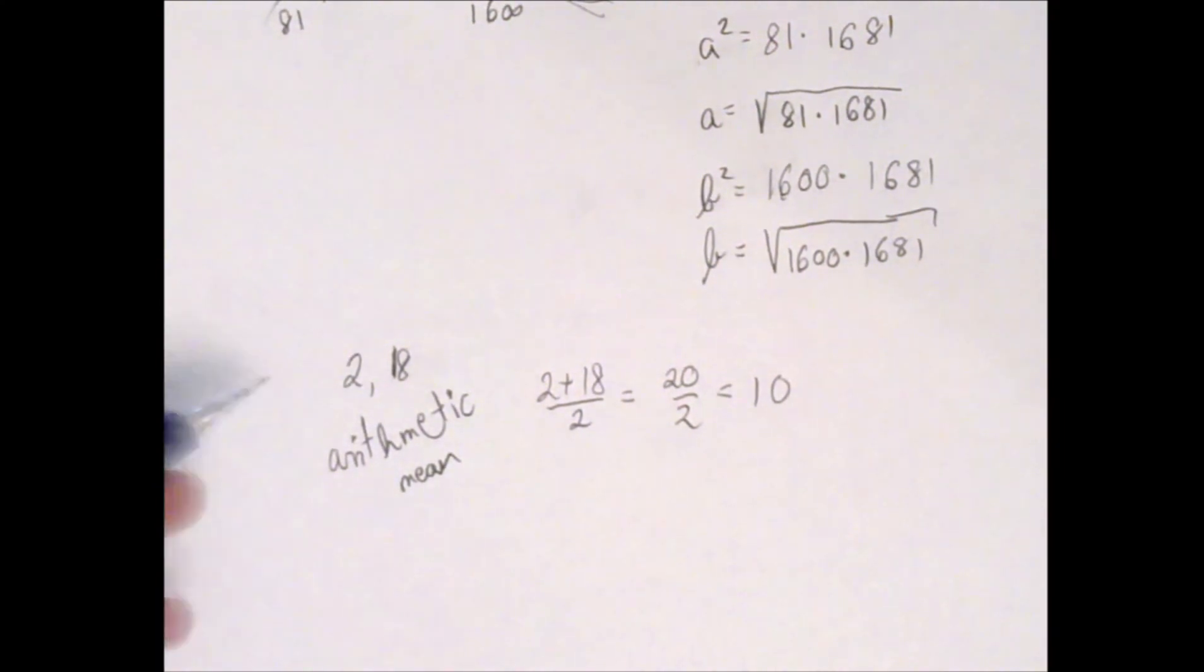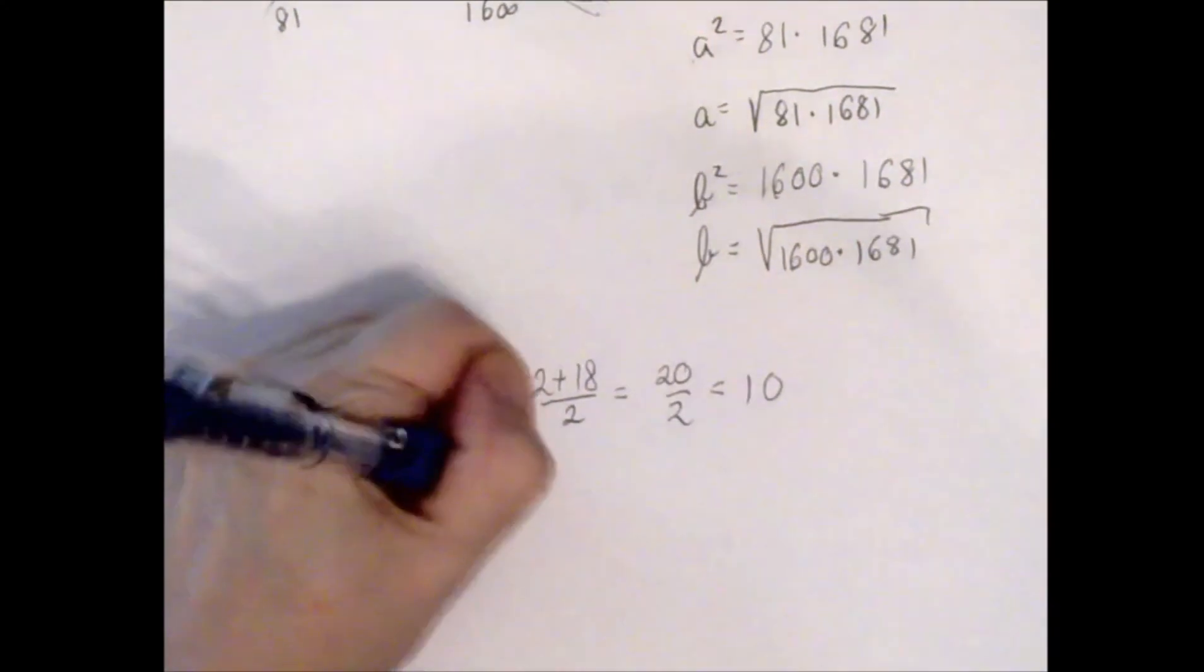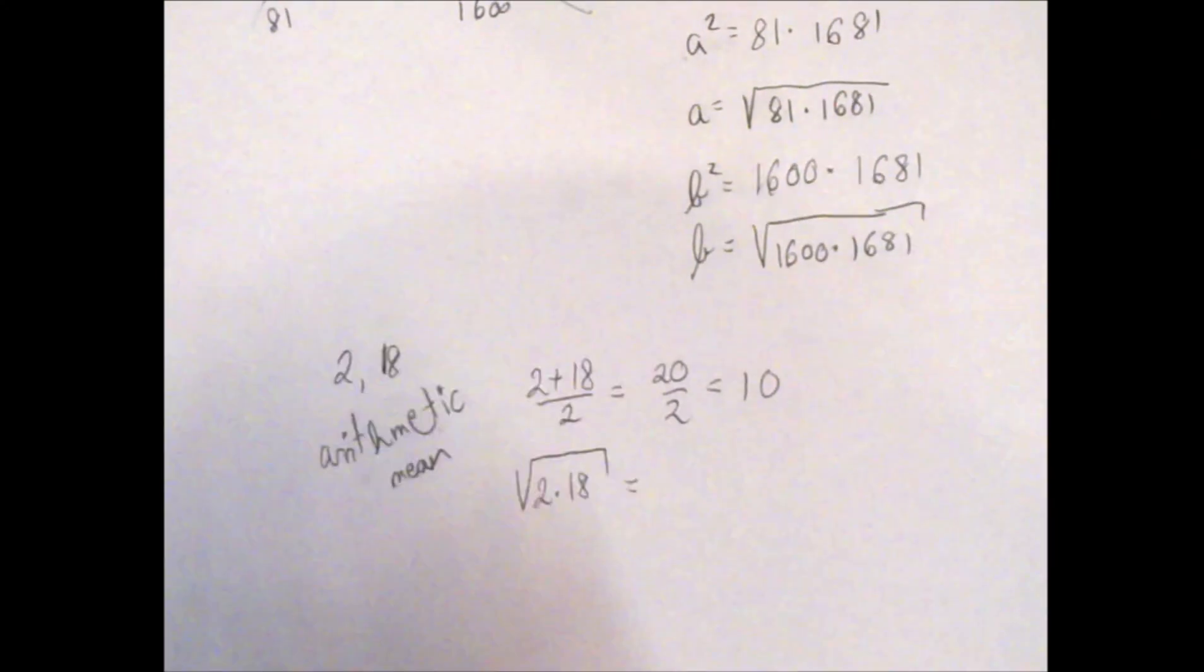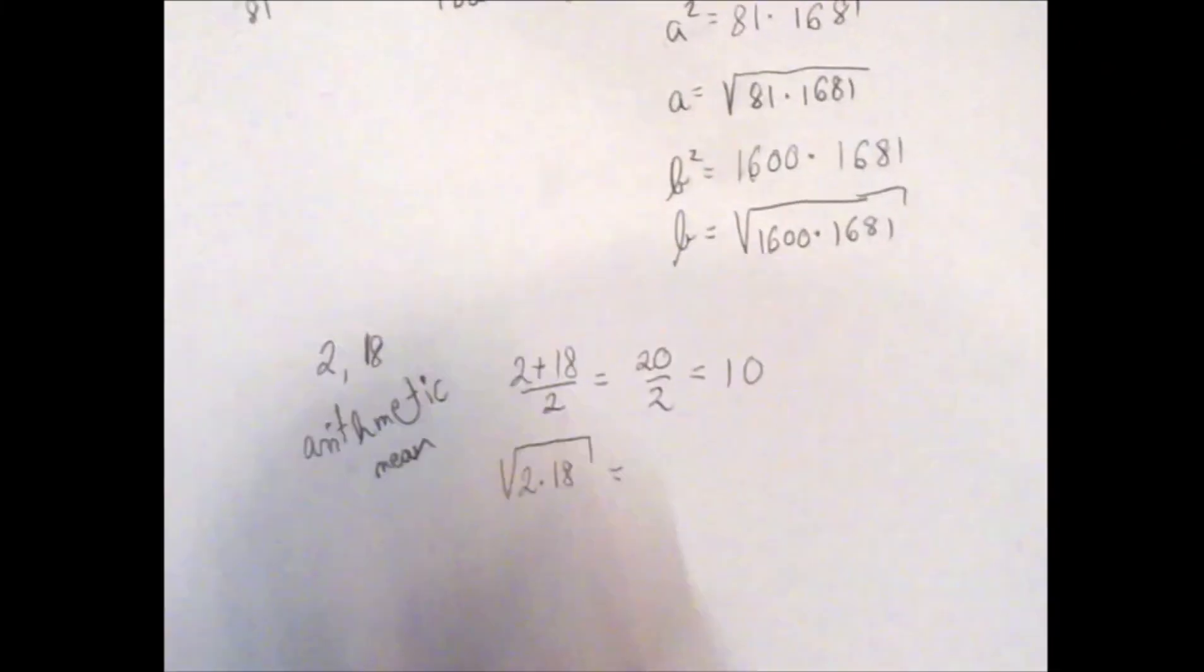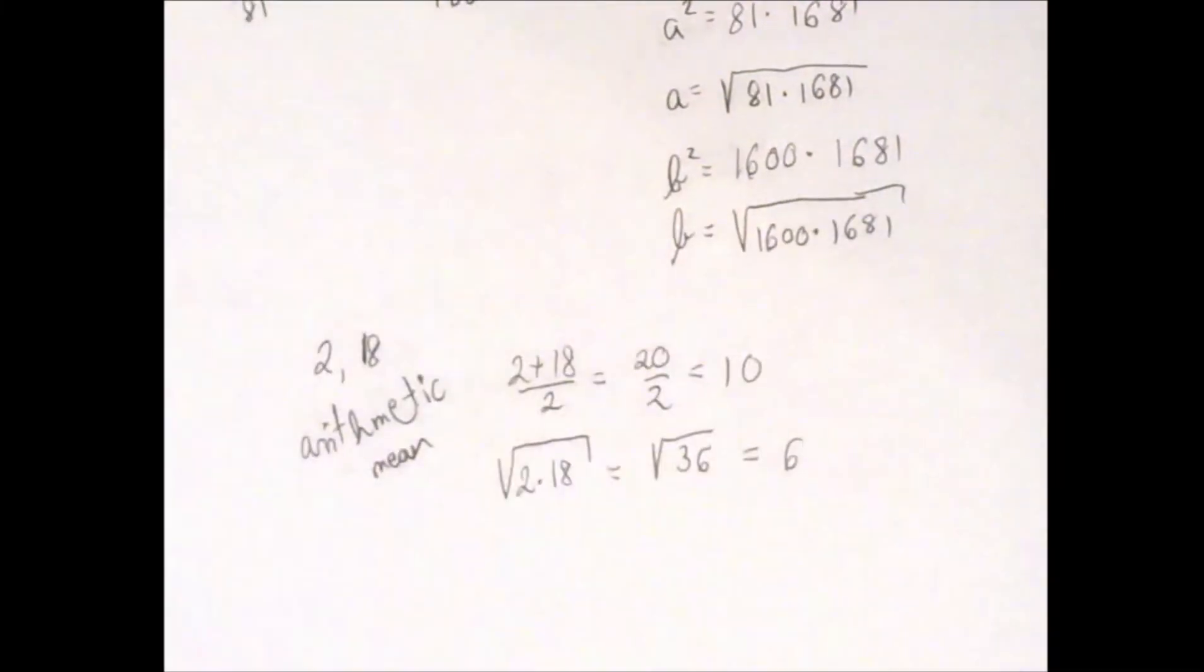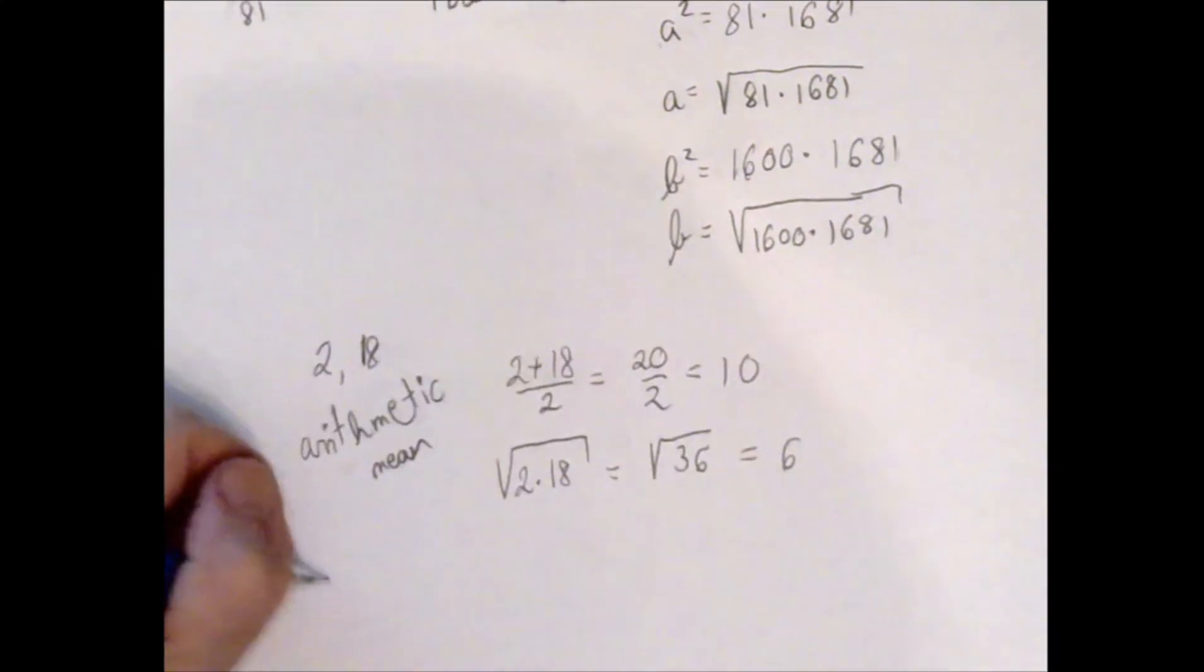We can even out these two numbers with respect to multiplication, which means what two equal numbers when we multiply would give the same product. That would be 2 multiplied by 18, and when you're done, take the square root—that's the square root of 36, which is 6. That is called the geometric mean of 2 and 18.